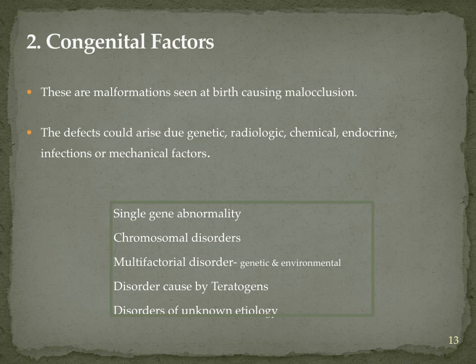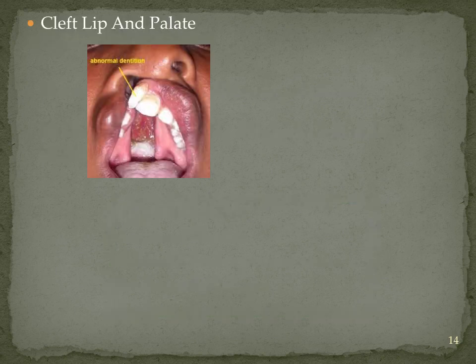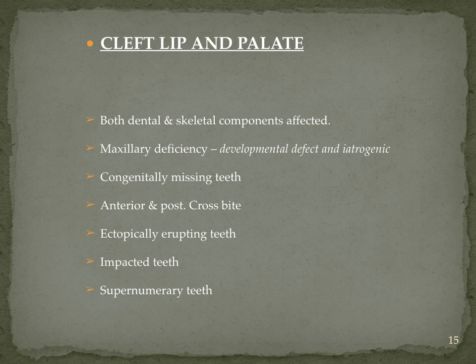Next are congenital factors — malformations seen at birth that cause malocclusion. These can be single gene abnormalities, chromosomal disorders, multifactorial disorders, disorders caused by teratogens, or unknown etiology. Most commonly as an orthodontist we will encounter patients with cleft lip and palate, working within a multidisciplinary team to render services to these patients.